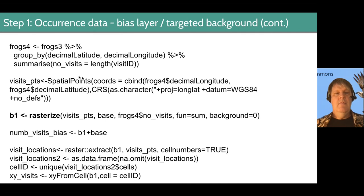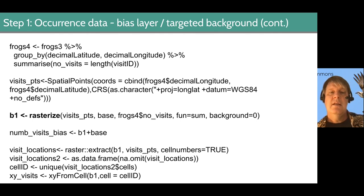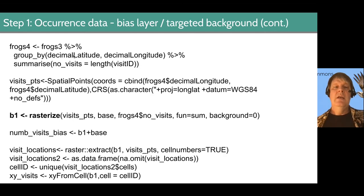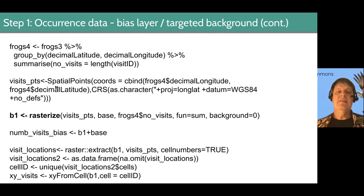Then we're going to group by just latitude and longitude to get a sense of how many unique visits were conducted at those coordinates — dropping out date from those. We're counting locations within any latitude and longitude that match, and we're turning this into a spatial points layer as well. When we're done with this, we're going to turn that spatial points layer back into a raster layer using the rasterize() function.